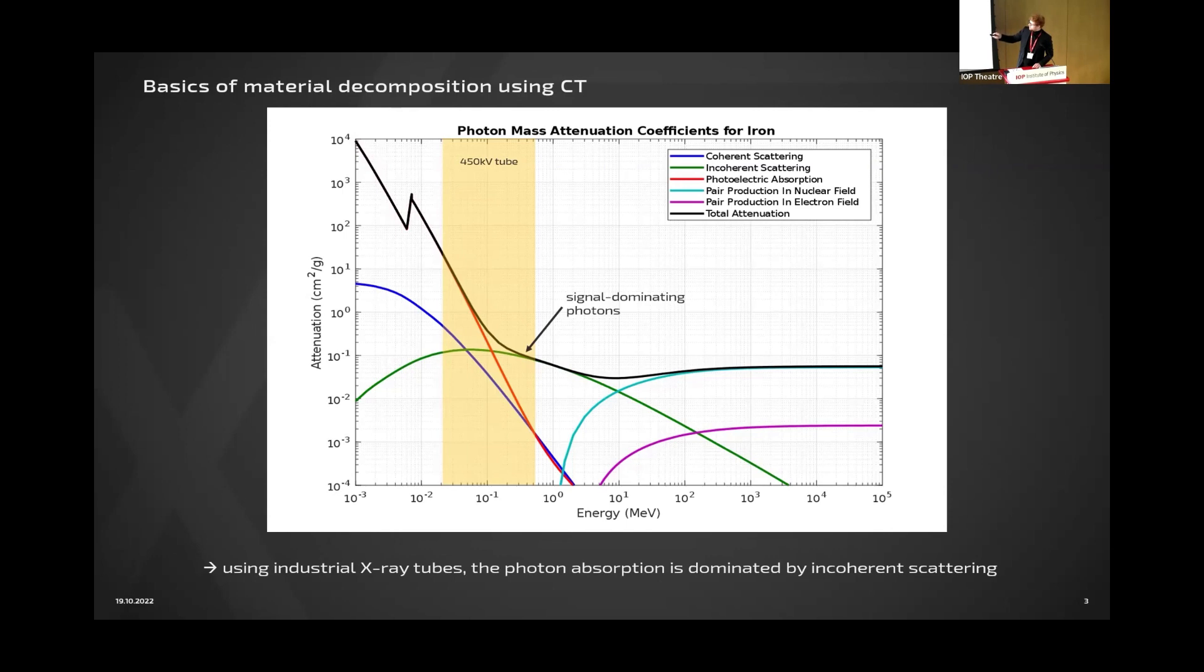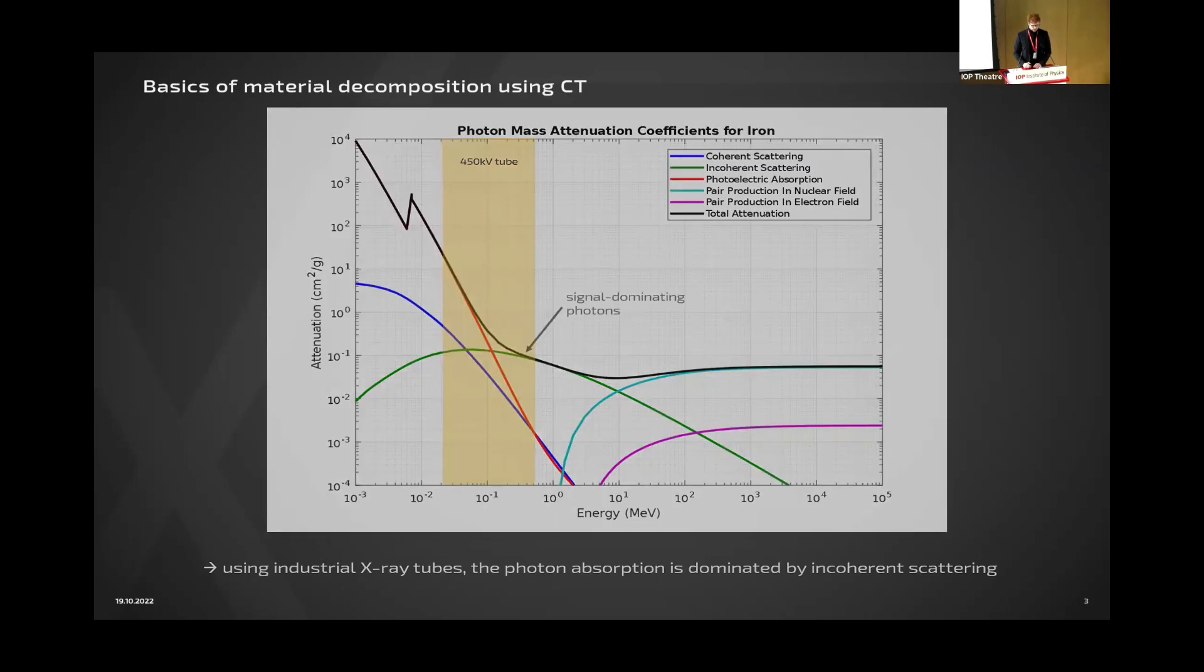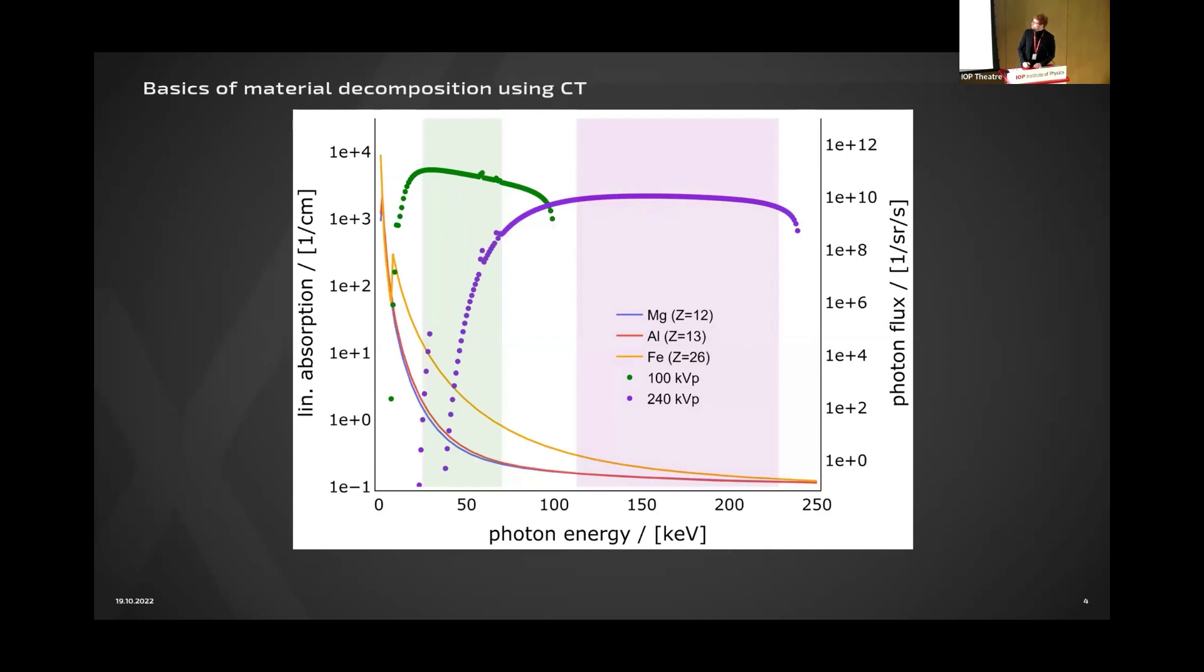The K edge of iron is down there. For other materials, there is a more colorful overview: magnesium, aluminum, iron in the solid lines. Our normal spectra operate in this shadowed area, and we do not have any K edge information in our signal. So we cannot use these K edges as some kind of characteristic fingerprints for the materials.